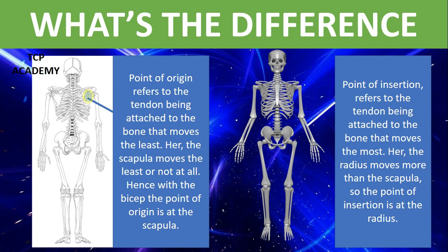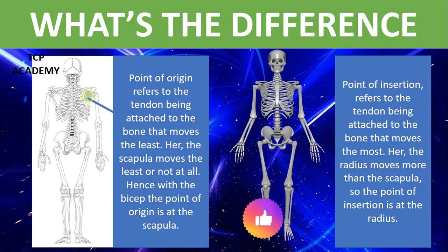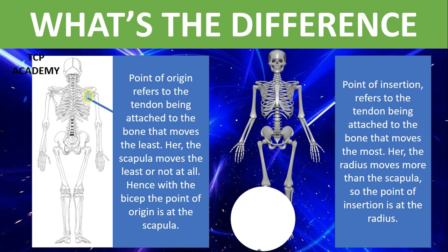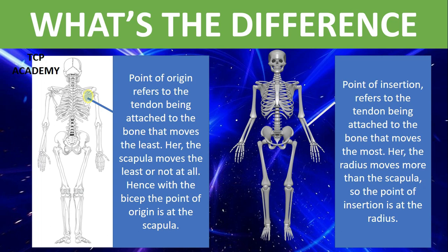Let's look at the point of insertion. The point of insertion refers to the tendon being attached to the bone that moves the most. Here, the radius moves more than the scapula, so the point of insertion is at the radius.